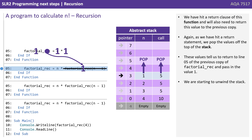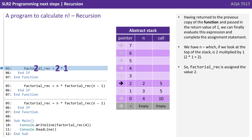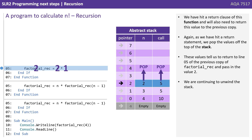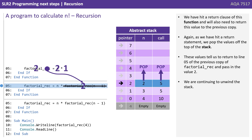We're starting to unwind the stack. Having returned to the previous copy and passed in the value 1, we can finally evaluate this expression. We have n — which, looking at the top of the stack, is 2 — multiplied by 1. 2 times 1 is 2, so factorial_rec is assigned the value 2. We've hit a return clause and pop the values at the top of the stack. These values tell us to return to line 5 of the previous copy of factorial_rec and pass in the value 2. We're continuing to unwind the stack.